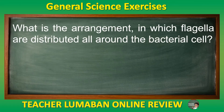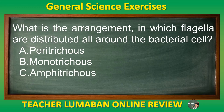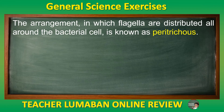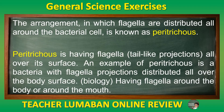What is the arrangement in which flagella are distributed all around the bacterial cell? Letter A: Peritrichous. Letter B: Monotrichous. Letter C: Amphitrichous. Letter D: Lophotrichous. The correct answer is Letter A: Peritrichous. The arrangement in which flagella are distributed all around the bacterial cell is known as Peritrichous. Peritrichous describes having flagella — tail-like projections — all over the cell surface. An example is bacteria with flagella projections distributed all over the body surface.